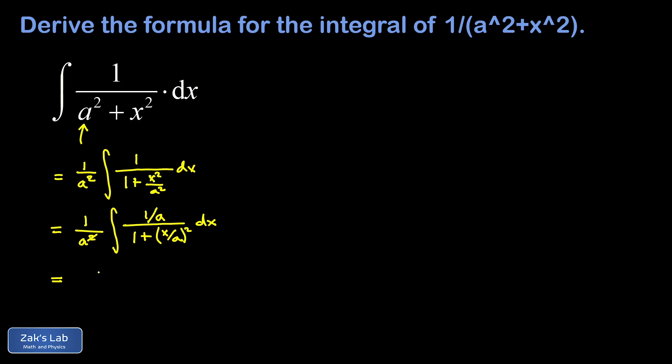With the derivative of the interior function appearing in the integrand, it makes it very simple to guess the antiderivative. We've taken care of the effect of the chain rule already. So there's a 1 over a out in front, and then 1 over 1 plus something squared integrates to the inverse tangent of that thing, which is x over a, plus c.